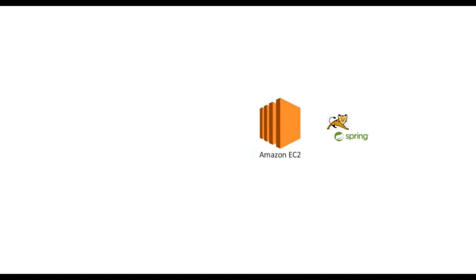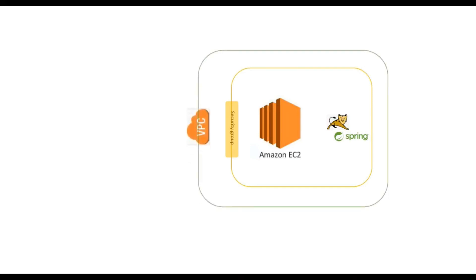I have a Spring Boot application which I would like to deploy in an Amazon EC2 instance. Whenever you launch a new EC2 instance it's always going to be attached with a security group, and the EC2 instance itself is going to be inside a VPC — a Virtual Private Cloud. By default, AWS creates a default VPC for you. Any user who wants to use your application will send a request and it will go through the VPC first, then to the security group, and then finally reach your EC2 instance where your Spring Boot application is deployed.